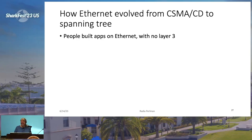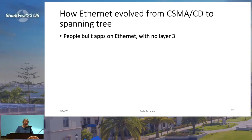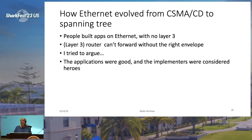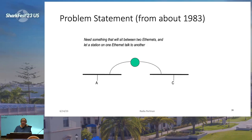How did Ethernet evolve from CSMA/CD to spanning tree? People built applications on Ethernet without layer three in the network stack. I said, hey, you still need layer three. They said, Radia, you're just upset because no one needs your stuff anymore. I said, you may want to forward from one Ethernet to another. They said our customers would never want to do that. You can't just put a router in there — it can't forward unless the end node cooperates. The applications they built were good and made lots of money, but the applications would have been just as good had they done it properly with layer three in the end nodes.